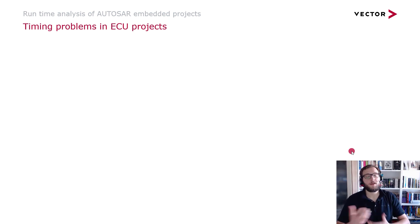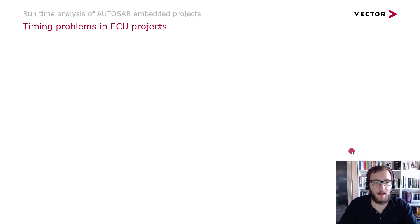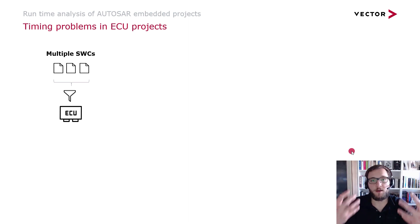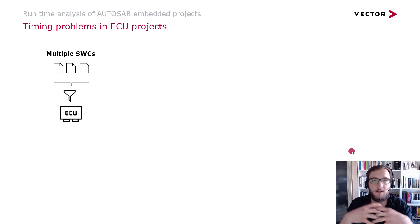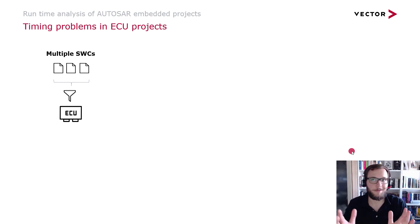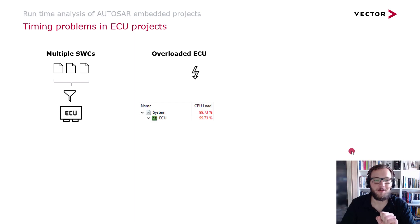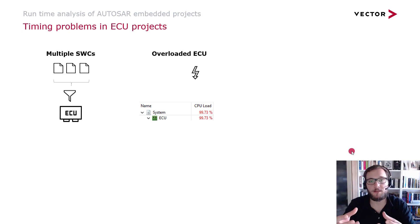Which different kinds of timing problems do we see in ECU projects? In general, ECU projects involve many different software components that need to be integrated. Most times, at the end of projects, you will see issues with timing. For example, the system could be completely overloaded — very close to 100% CPU load — which might cause different functional tests to fail because not all tasks are executed as expected.